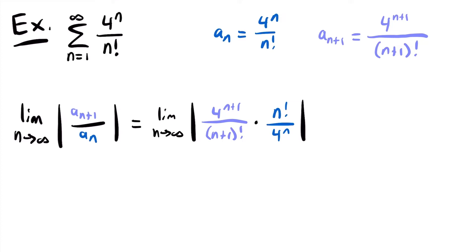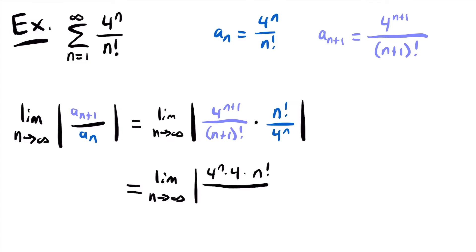To simplify, we split up 4 to the power of n plus 1 as 4 to the power of n times 4. Then we rewrite n plus 1 factorial as n plus 1 times n factorial — just like 4 factorial equals 4 times 3 factorial. This allows us to cancel n factorial and 4 to the power of n from numerator and denominator.